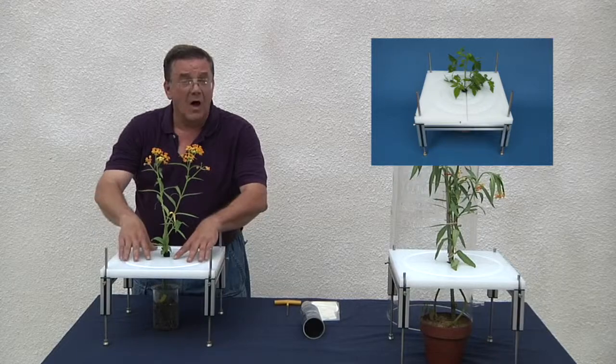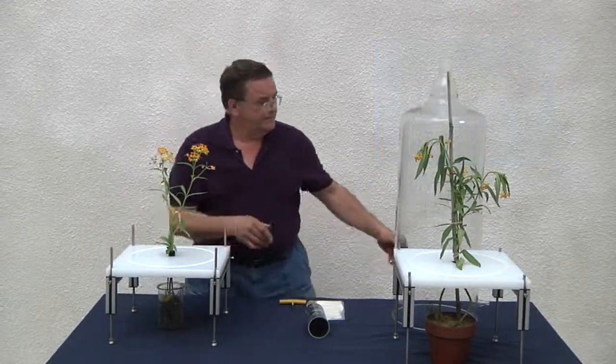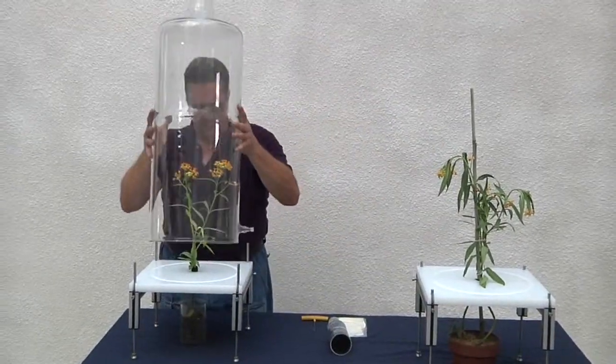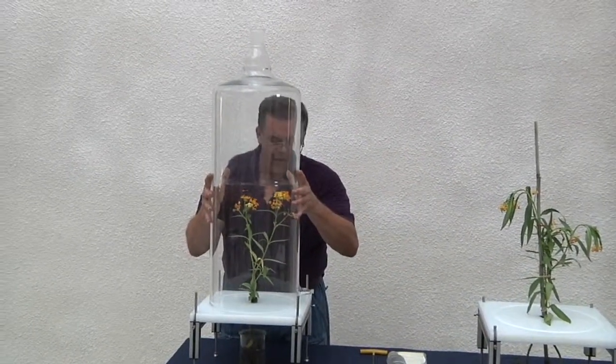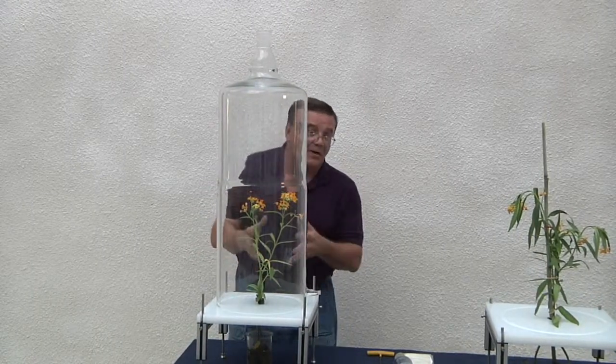Once we have our plant specimen locked into the guillotine stand, we can add our chamber. The chamber I'm using right now is one of our largest. It's 300 millimeters in diameter and over 600 millimeters tall. It can accept a much larger plant than the one I'm using here. This is also our new ambient air system.